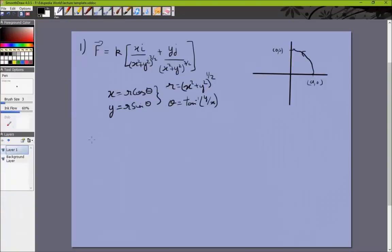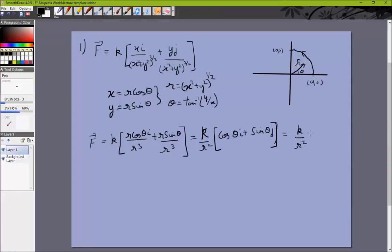If you substitute these two values for x and y in F, you get F = K times (r cos θ i cap)/(r³) + (r sin θ j cap)/(r³), which is (K/r²) times (cos θ i cap + sin θ j cap). Now we know what this vector is: cos θ i cap + sin θ j cap is a vector of magnitude 1 in this direction, so it is basically the unit radial vector r̂. So we can write F as (K/r²) r̂.